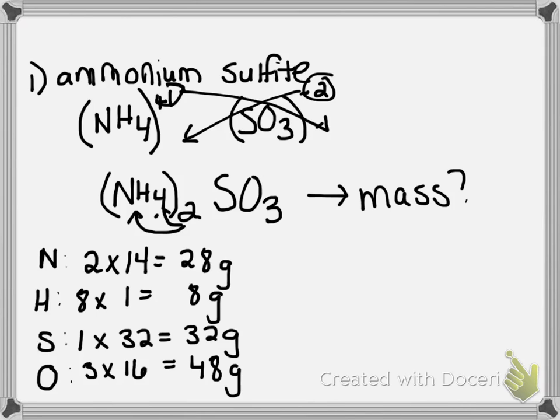And so now, to get the percent composition, first step, we need to figure out what is the total mass of this compound. And in order to figure that out, we simply add up each element's mass. 28 plus 8 plus 32 plus 48 gives us a total of 116 grams. And that's going to be our molar mass for ammonium sulfite. And since it's a molar mass, we're going to say 116 grams per mole.